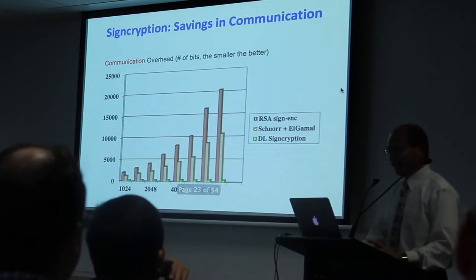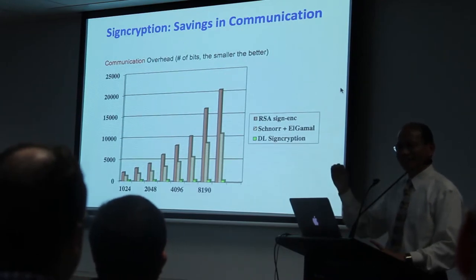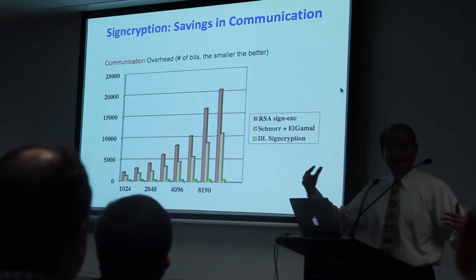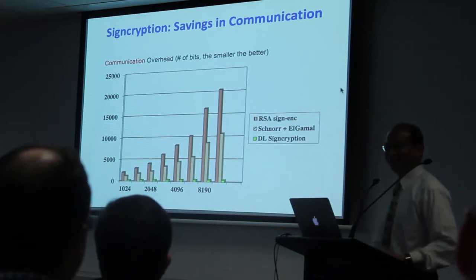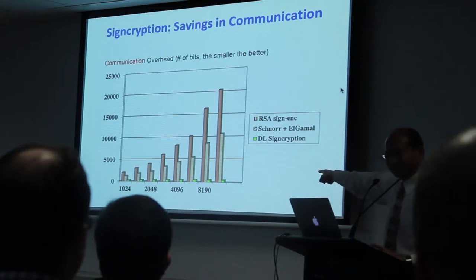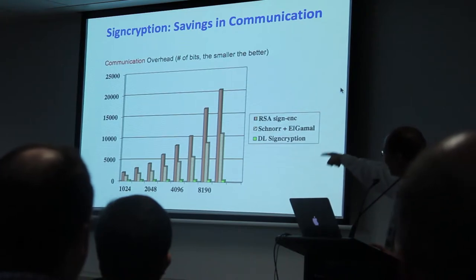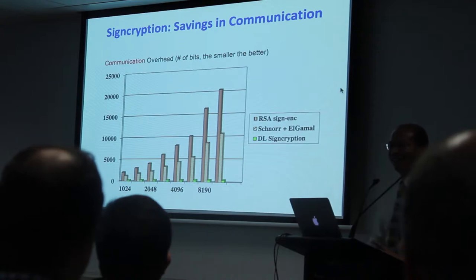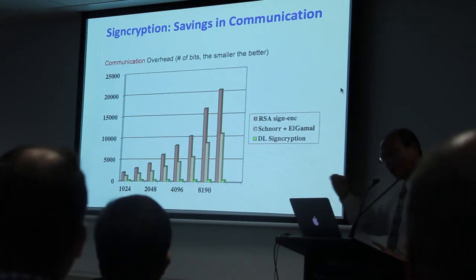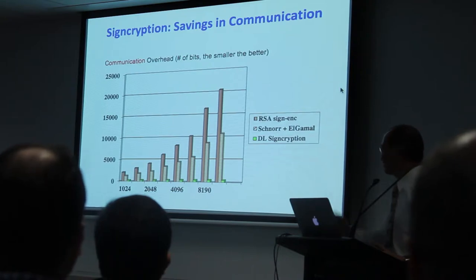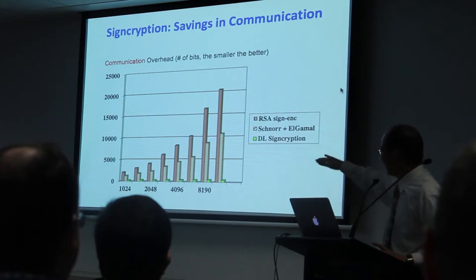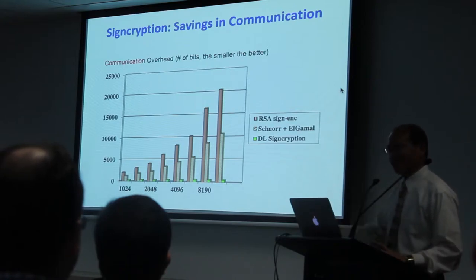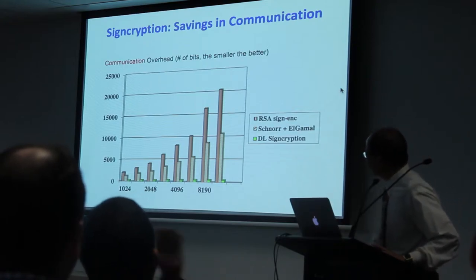That's in terms of computation. What about the communication overhead — the added number of bits? This is even more dramatic. The new technology stays at the bottom; the others grow very quickly. Signcryption grows very little compared to the traditional way. So this is more dramatic.